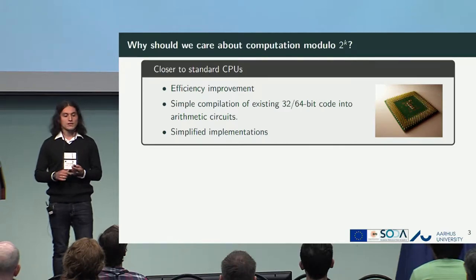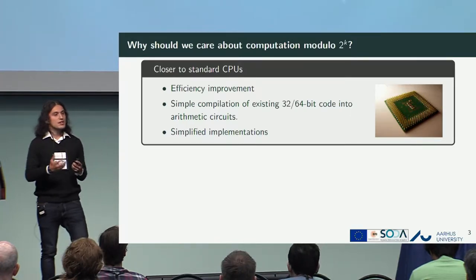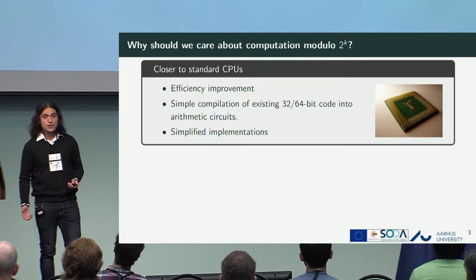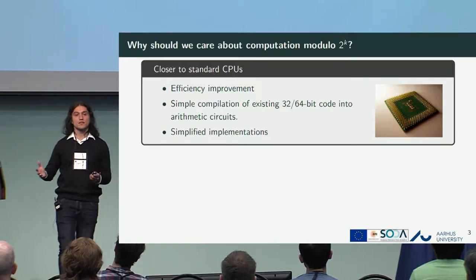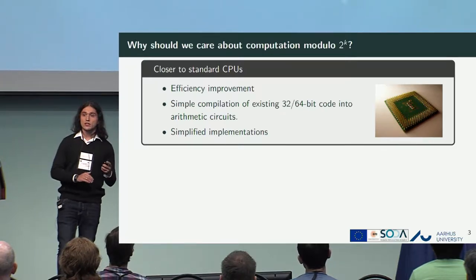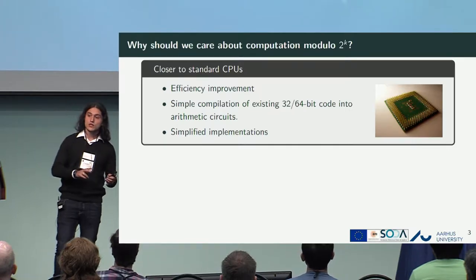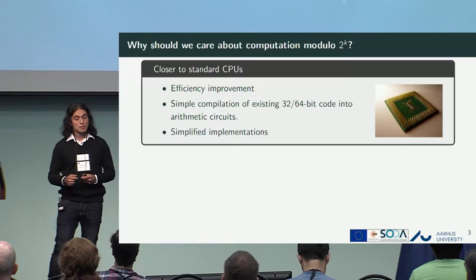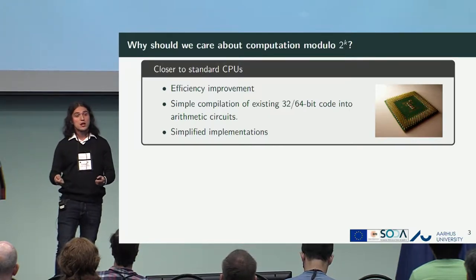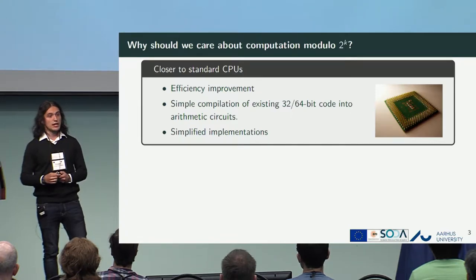Why do we think this is an important case of study? From the practical point of view, it's very natural because it's closer to what standard CPUs do. It's very natural to think that if you do computation modulo 2^64 or 2^32, you'll get an efficiency improvement because you don't need to reduce modulo p — for example, 2^64 + 13, which is a prime — every time you run your computation. Also, if you already have a program written in C or C++, it should be easier to compile that program into a circuit if the modulus is exactly the same. And finally, there are some functions very natural to implement modulo 2 to some power, like bit decomposition, bit comparison, and so on — functions that work at the level of bits. If you have a protocol that works in this setting, it would be very natural to shift these functions to a secure implementation.